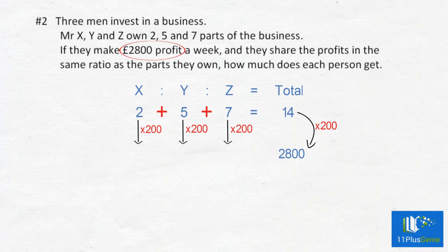2 times 200 equals 400. 5 times 200 equals 1,000. And 7 times 200 equals 1,400.